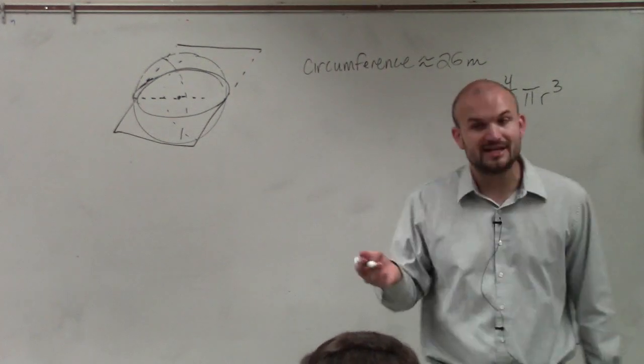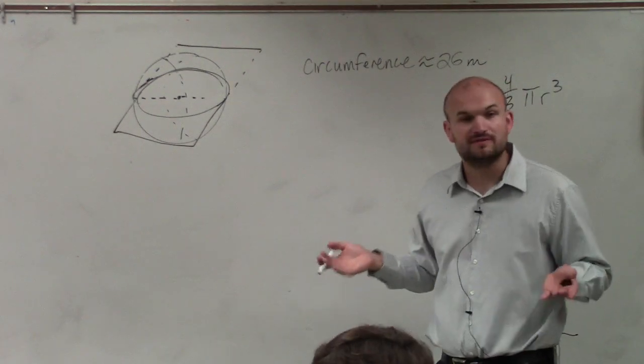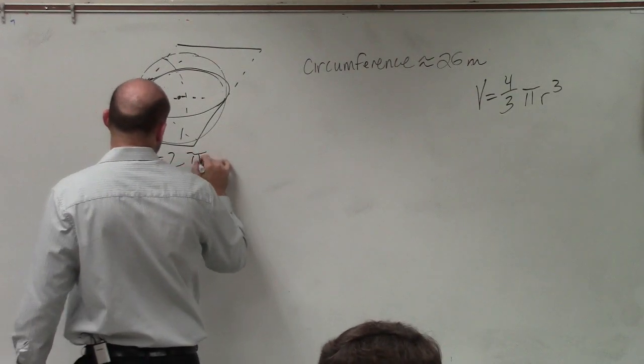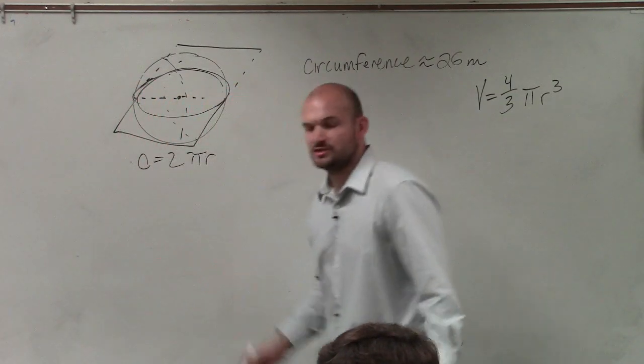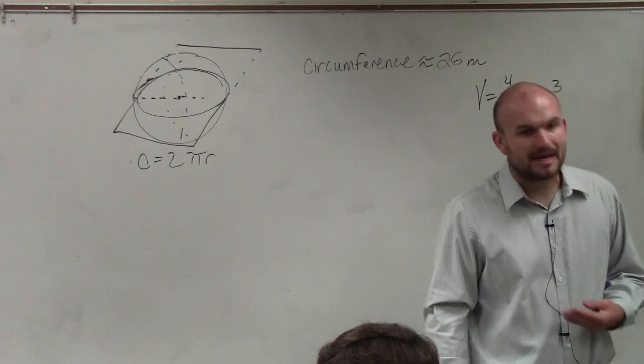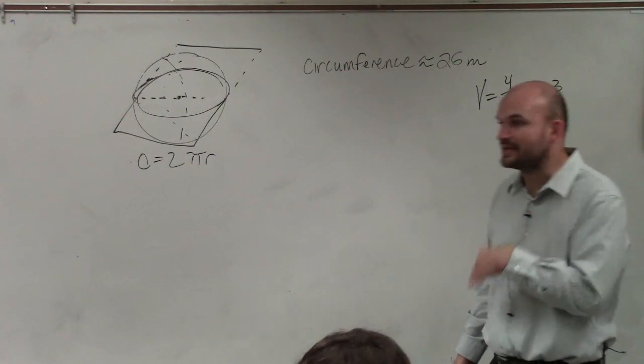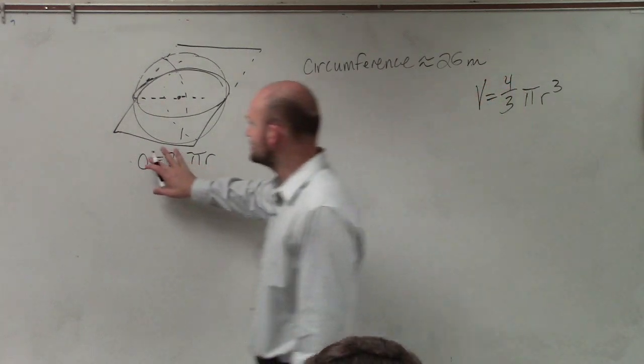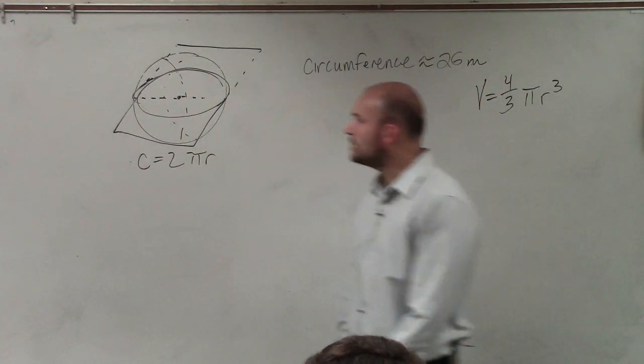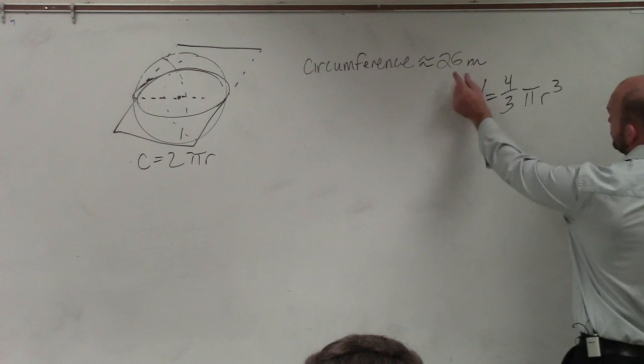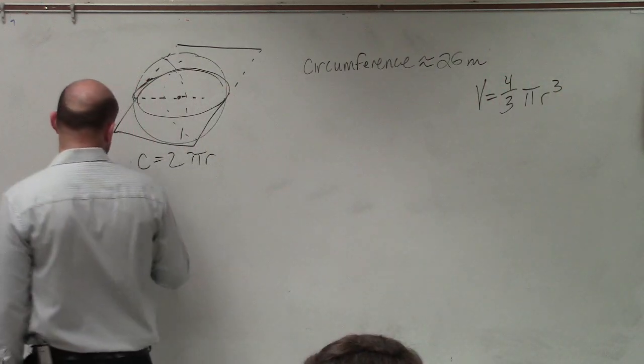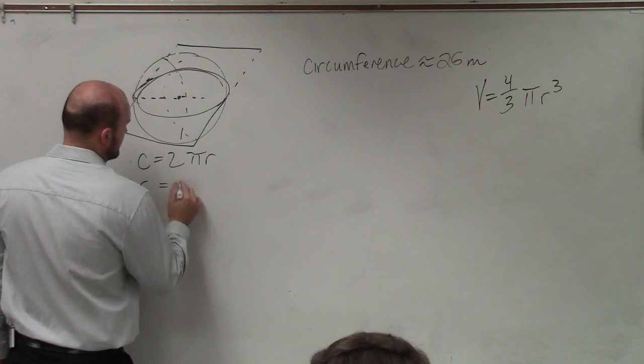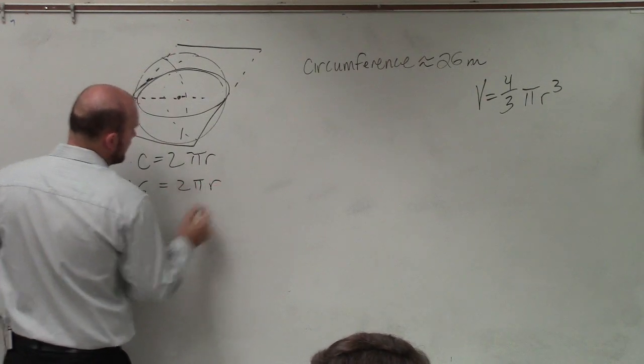So to find the radius, we need to know the definition of the circumference or the formula. Circumference equals 2 pi r. You could also say it's diameter times pi. Diameter is the same thing as 2 r. So it doesn't really matter which formula you want to use. So circumference equals 2 pi r. My circumference is approximately 26 meters. So I just write in 26 for c equals 2 pi r.